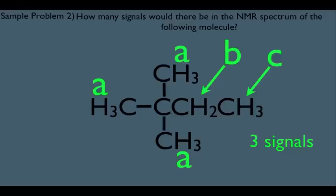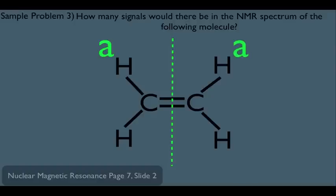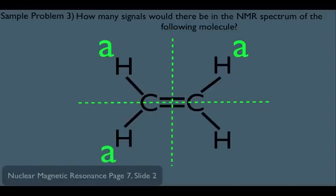You now know how to handle situations like this. In the next example, notice there's a line of symmetry here, so if I call this the A-type hydrogen, then this would also be an A-type hydrogen. But notice this molecule has more than one symmetrical line — it's also symmetrical the other way, which means the hydrogen in the lower left is the same as the A-hydrogen in the upper left, and the last hydrogen is also an A-type. So we would expect to see only one signal in the HNMR for this molecule.